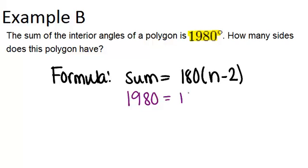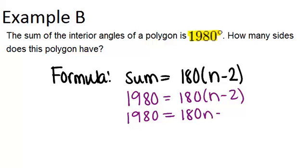So we can set up this equation and solve for n. The first thing I'm going to do is distribute the 180. So I have 1,980 equals 180n minus 360. To solve this, I have to add 360 to both sides, and I get 2,340.